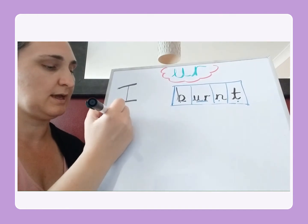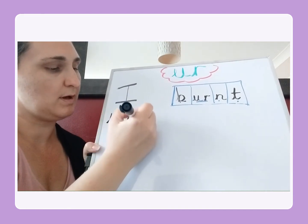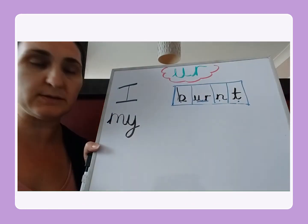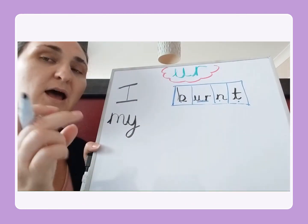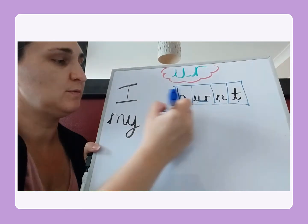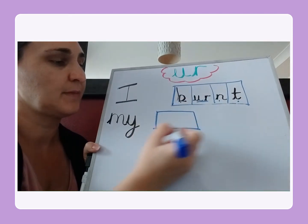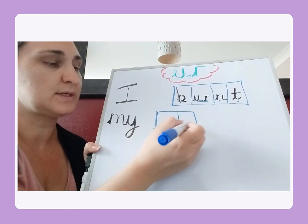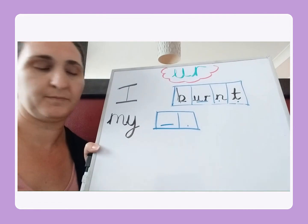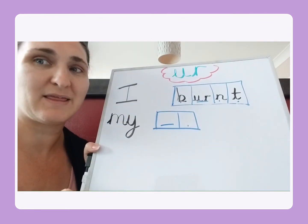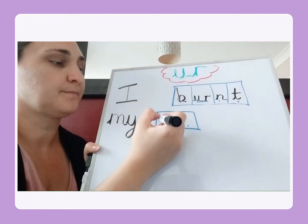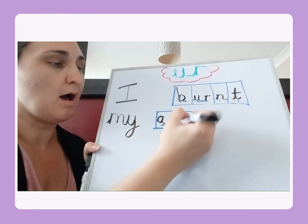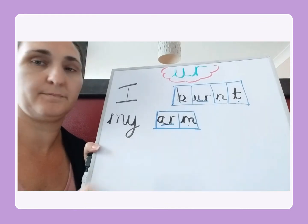I burnt my arm. Now I'm going to use the sound boxes for 'arm' because that ar sound is a relatively new one — we've looked at it recently. Arm — two boxes, two sounds. Now can we remember how to write that ar digraph? That's it: A, R — arm.